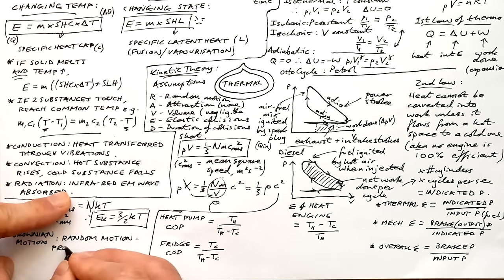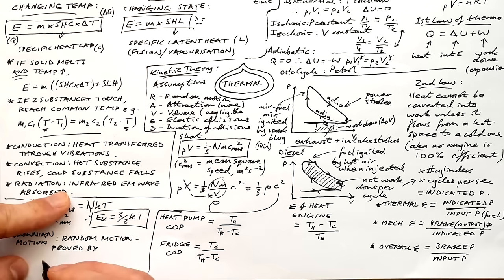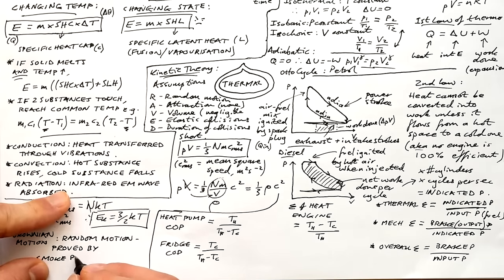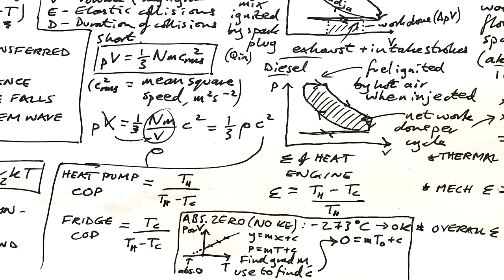Brownian motion describes random motion of particles inside a gas, and can be proved by looking at small smoke particles — we can see them wiggling around, meaning air particles are colliding with them randomly. For pressure or volume against temperature graphs — Charles's law or pressure law experiment — you can find absolute zero without extrapolation. Find the gradient m, use it to find the y-intercept c, then plug into the equation: 0 equals m times absolute zero temperature plus c. You should end up with approximately minus 273 degrees Celsius.